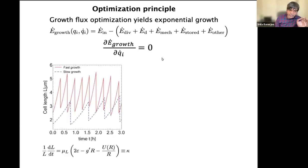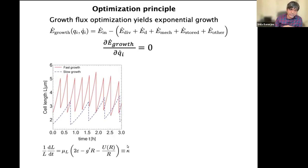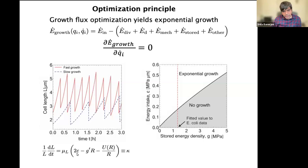With this optimization strategy, you can work out how shape, size, and concentration of biomolecules change over time. For example, what you get automatically is exponential growth — the length of the cell grows exponentially at some rate kappa that depends on the radius, how much nutrients are imported, how much energy is stored, etc. We can also work out a phase diagram — growth is not possible for all values of energy intake; you need some minimum amount of nutrients to start growth for a given value of stored energy.